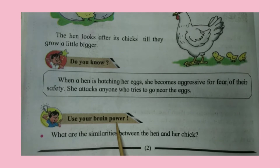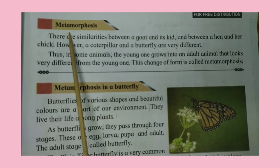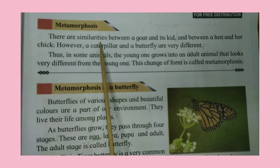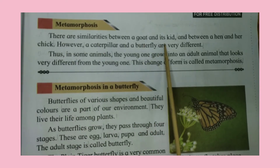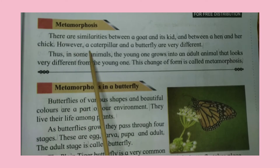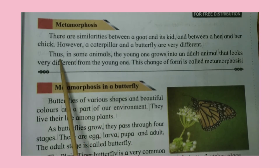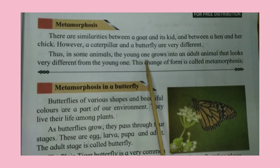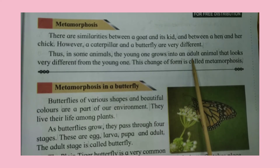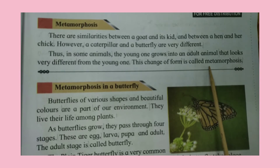Use your brain power. What are the similarities between the hen and her chick? Metamorphosis: There are similarities between a goat and its kid and between a hen and a chick. However, a caterpillar and a butterfly are very different. Thus, in some animals, the young one grows into an adult animal that looks very different from the young one. This change of form is called Metamorphosis.